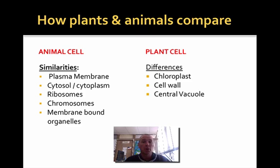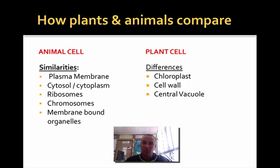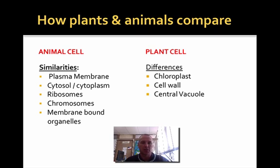They both do have some things in common: they both have a plasma membrane, they both have a cytosol or cytoplasm, they both have ribosomes — which we know all cells have, including prokaryotes. They have chromosomes, which all cells have including prokaryotes, just may not be in a nucleus. And the similarity between plant and animal is they both have membrane-bound organelles.